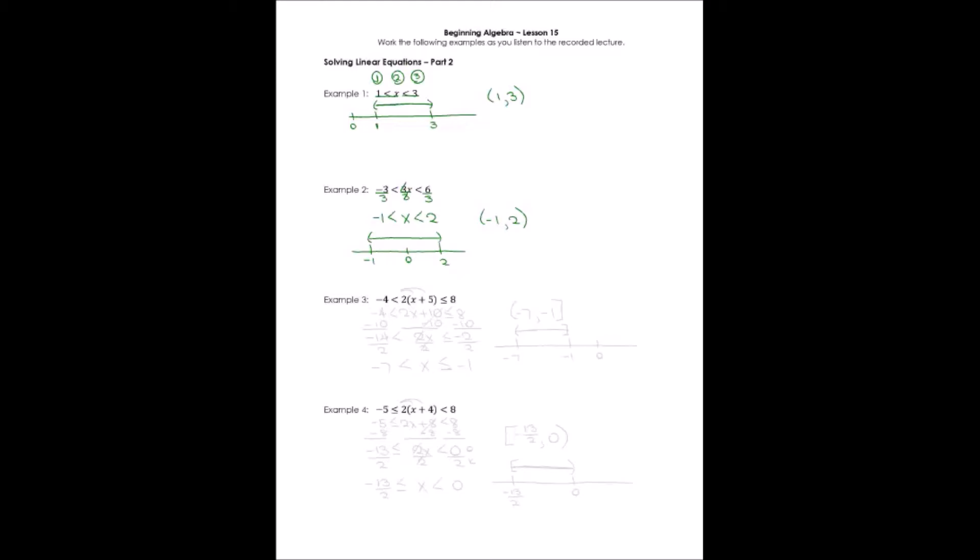Example three has more work to be done. In the center portion of our equation, of our inequality, we have to distribute. Two times x is 2x. Two times five is ten. Now, everything else stays the same. We are going to isolate our variable term. Well, 2x has ten added to it, so we're going to subtract ten. Remember, we have to do it from all three parts of it, or all three sides.